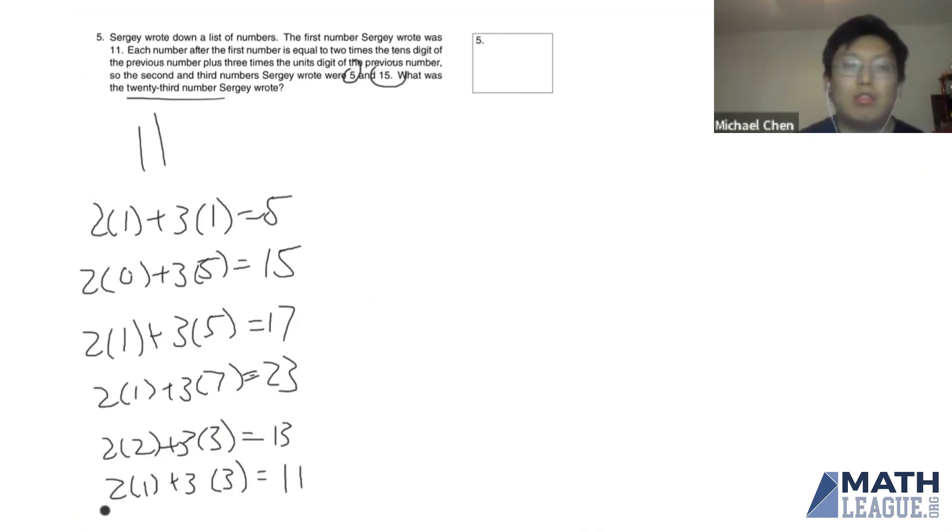So that means that our sequence repeats, because once we get to 11, we know that the next one is five. So let's number our numbers. So the first number is 11, the second number is five, and so on and so forth. And this lets us find out that the next time that 11 appears in our sequence is the seventh number.